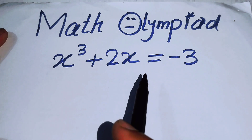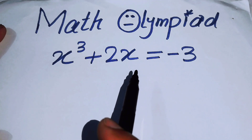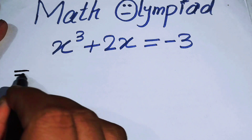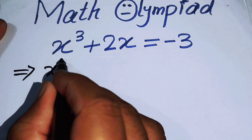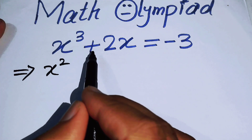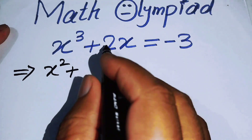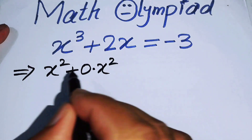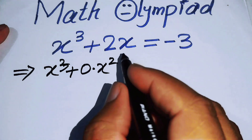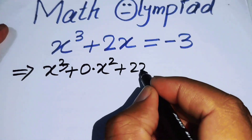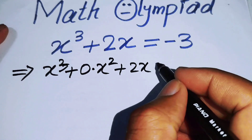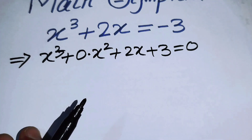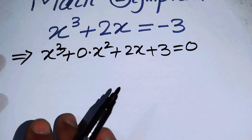The very first thing we are going to do is rewrite this equation. We see that the term of x squared is missing, so we will include the term of x squared with its coefficient equal to 0. So we can write it as x cubed plus 0 times x squared plus 2x, and we move the minus 3 from the right to the left hand side, so it becomes plus 3, giving us x cubed plus 0x squared plus 2x plus 3 is equal to 0.